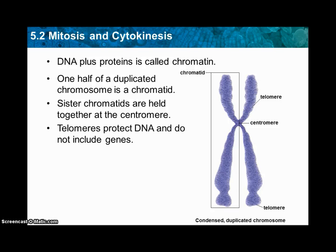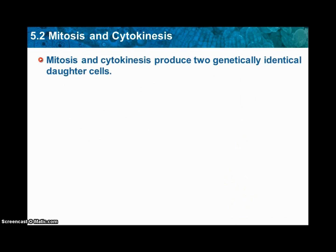If you're having trouble with these definitions, they are all on page 131 as well. Mitosis and cytokinesis produce two genetically identical daughter cells — they have to be genetically the same. During interphase, the cell prepares to divide. Interphase consists of G1, S, and G2, and then we start mitosis and cytokinesis.